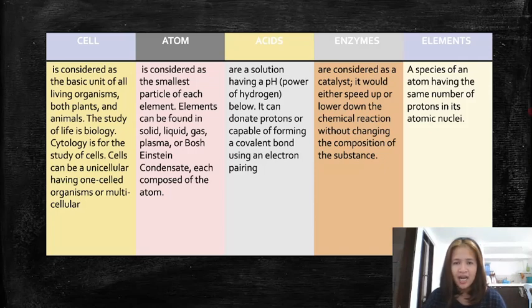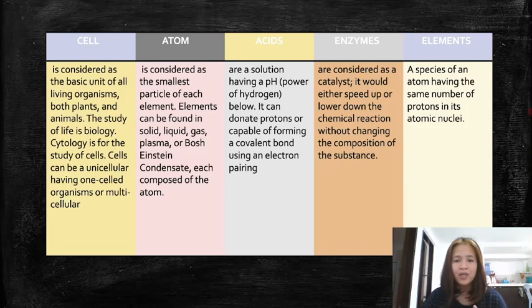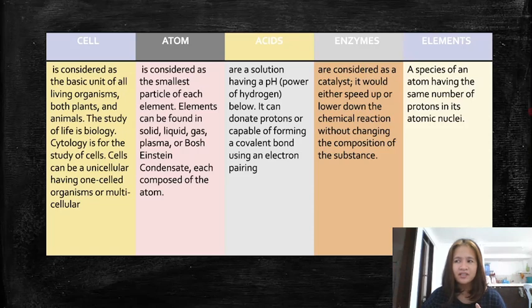Acids are solutions having a pH — which stands for power of hydrogen — below 7. They can donate protons or are capable of forming covalent bonds using an electron pairing. Acids are also chemical compounds that include hydrogen and can combine with other substances to generate salts.